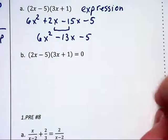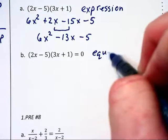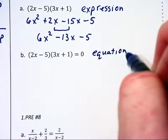Part B has the same two binomials but there is an equal zero at the end, so this is an equation and the directions would be to solve.